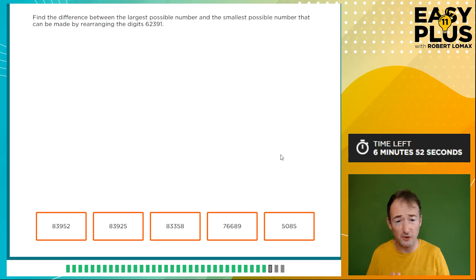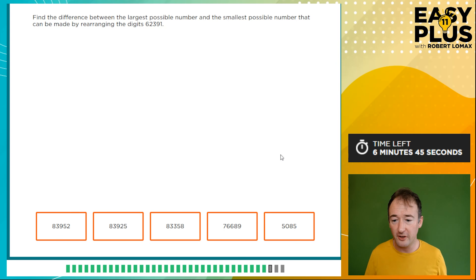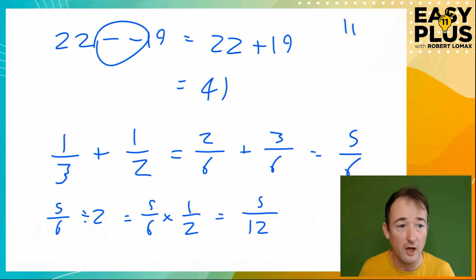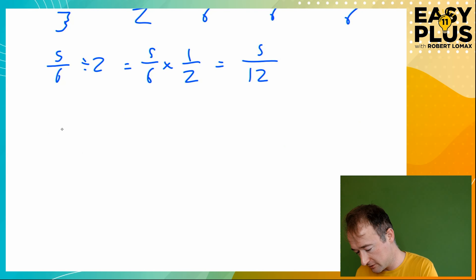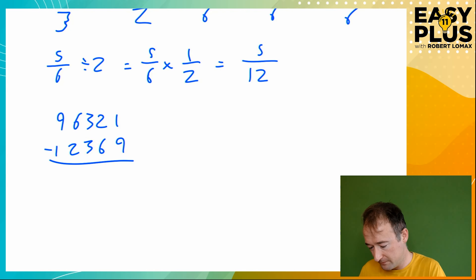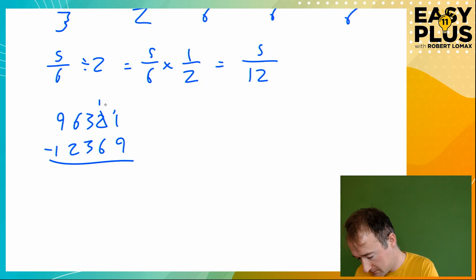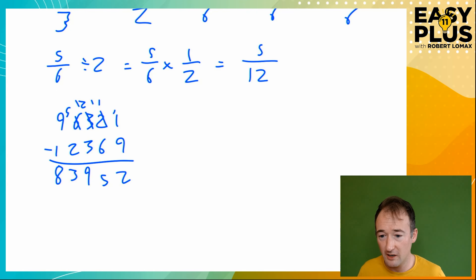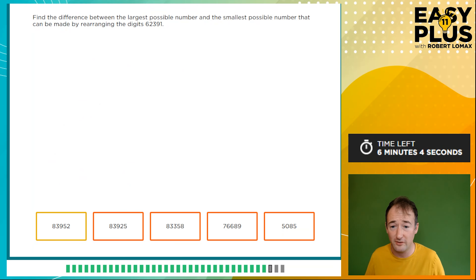The difference between the largest and smallest possible numbers made by rearranging the digits 6, 2, 3, 9, 1. To get the largest number, write digits from largest to smallest: 96,321. To get the smallest, write from smallest to largest: 12,369. Now subtract: 96,321 minus 12,369. Working through the subtraction with carrying gives 83,952. That is indeed one of the options.